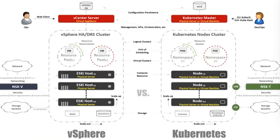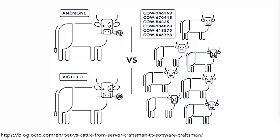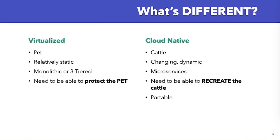Now let's talk about the pets versus cattle analogy. In a traditional virtual infrastructure or with physical servers, those are treated like pets. I remember naming contests in the IT department — maybe Transformers or Greek gods as naming schemes across all our production servers. In a cloud native architecture, pods and containers are treated like cattle — they're spun up and destroyed by the hundreds or thousands.